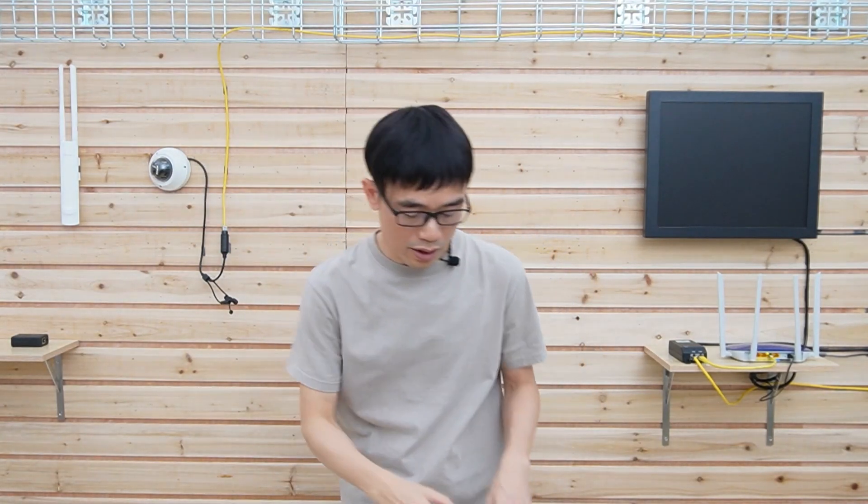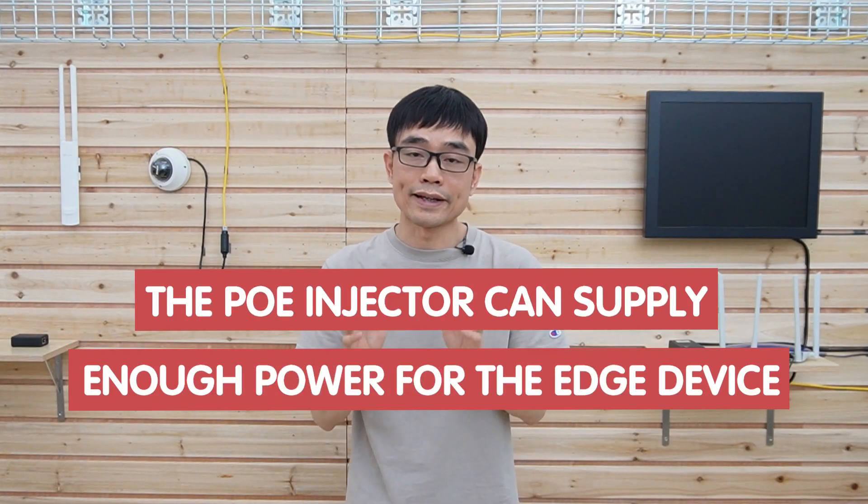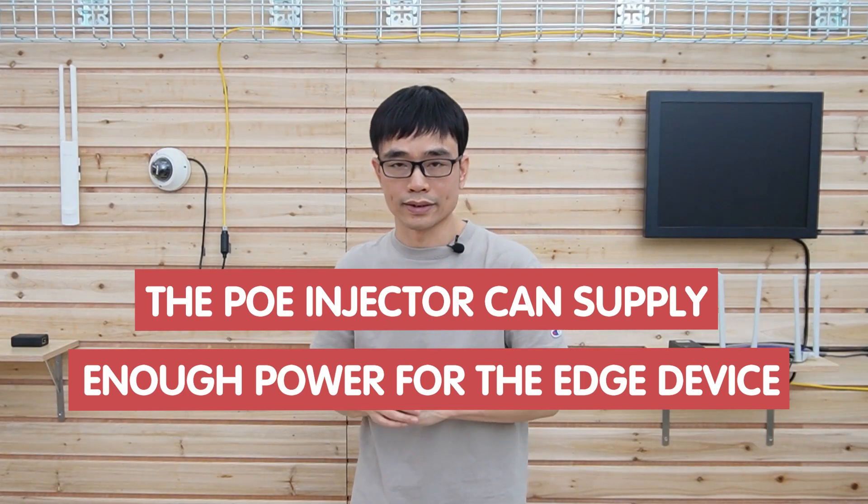However, if you are working with this big guy, a Pan-Tilt-Zoom camera with infrared built-in, it will take about 24 watts. So when you choose the PoE injector, you need to make sure your PoE injector can supply enough power for your edge device.